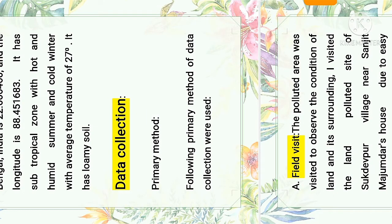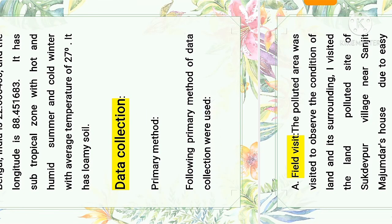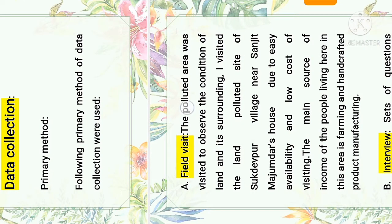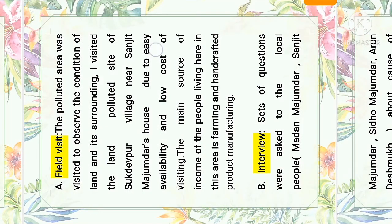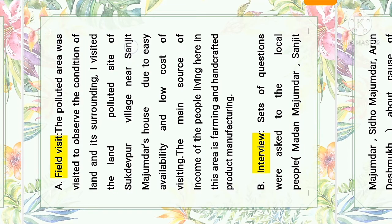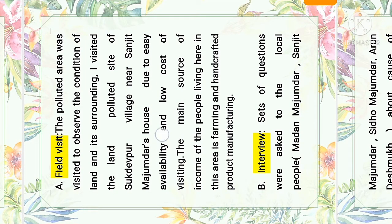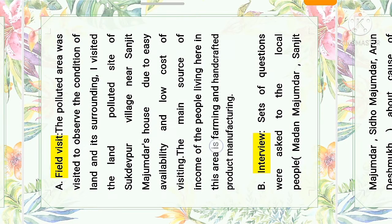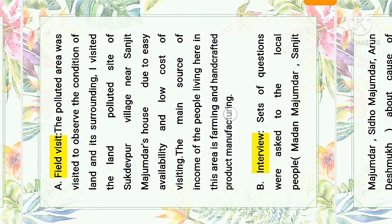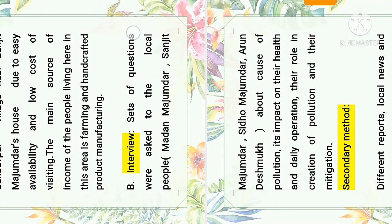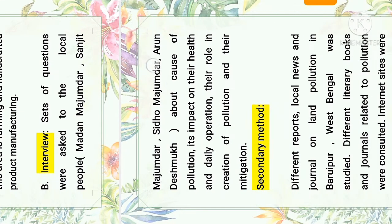Data collection — primary method: a field visit was conducted where the polluted area was visited to observe the condition of land and its surroundings. I visited the land polluted site of Sukdebpur village near Sanjit Majumdar's house due to easy availability and low cost of visiting. The main source of income of the people in this area is farming and handicraft product manufacturing. For the interview, sets of questions were asked to local people — Modan Majumdar, Sanjit Majumdar, Siddo Majumdar, and Arun Deshmukh — about the cause of pollution, its impact on health and daily operations, their role in creation of pollution, and their mitigation measures.